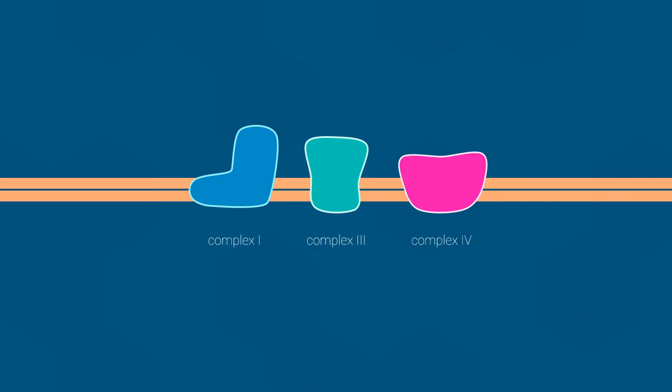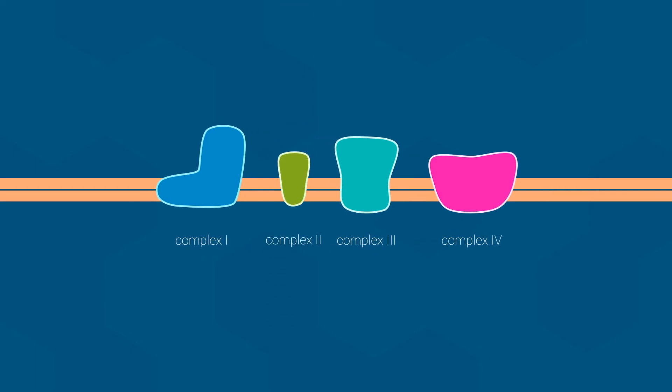But before we talk about that, let me return to the complexes. As you can see, we are missing complex 2. Complex 2 is the protein involved with electrons that are transferred via FADH2. It behaves much like complex 1, except that it does not pump any protons. Electrons entering via complex 2 also move down the chain to reduce oxygen.